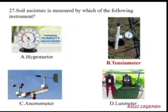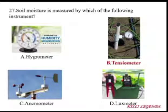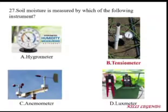Anemometer is used for wind velocity and wind direction. Luxmeter is used for light intensity measurement.